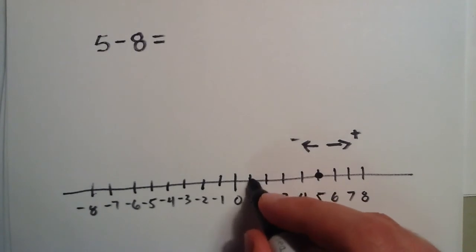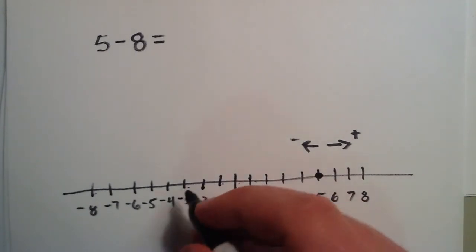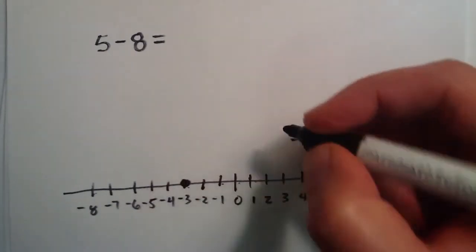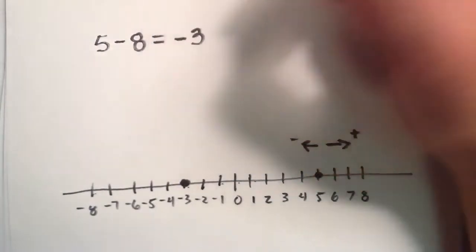1, 2, 3, 4, 5, 6, 7, 8 units to the left brings us to the value negative 3, which is the amount that we owe our bank.